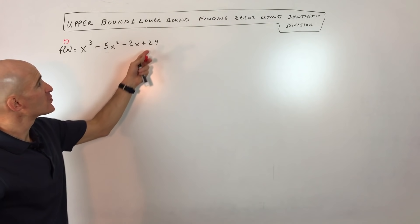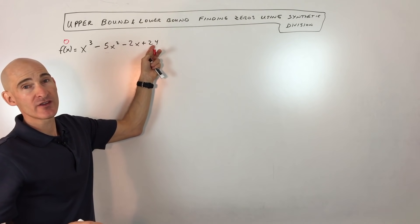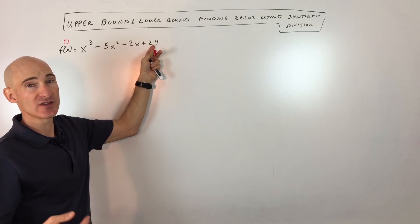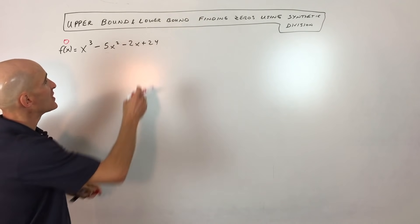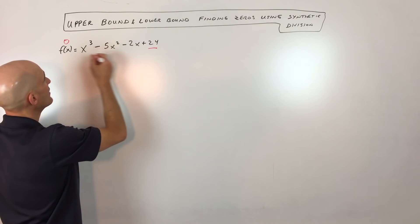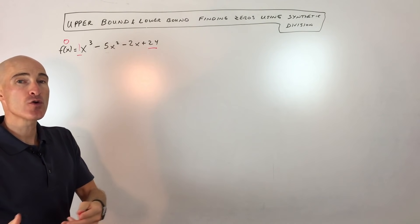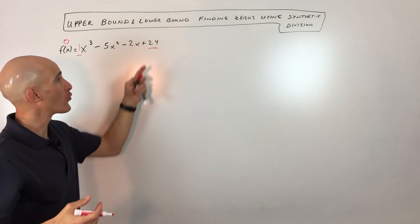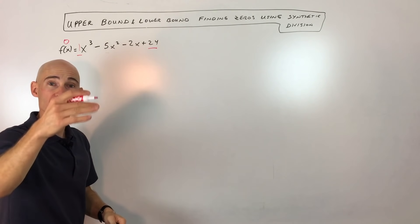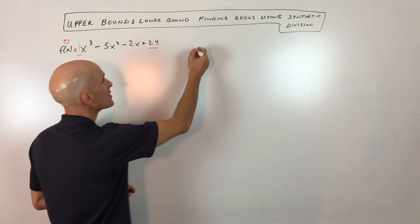But what we're going to do first is we're going to use the rational root theorem, or oftentimes called the rational zero theorem. And what you do is you take all the factors of the constant divided by all the factors of the leading coefficient. And this gives you a narrower list of possible rational zeros. Rational meaning a ratio, like a fraction of two quantities. So let's do that.